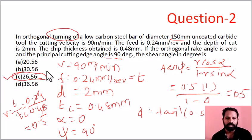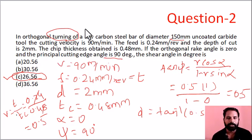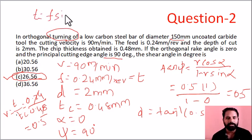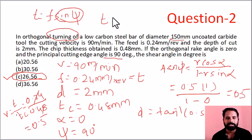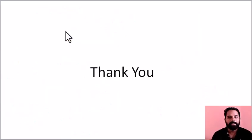Option C is the correct answer. Note that we should memorize key inverse trigonometric values. Here, because the principal cutting edge angle ψ is 90 degrees, the uncut chip thickness T equals feed multiplied by sin ψ, and since ψ is 90 degrees, the uncut chip thickness equals the feed directly.